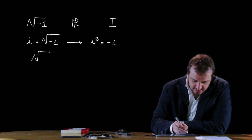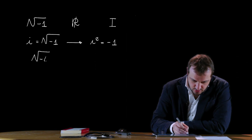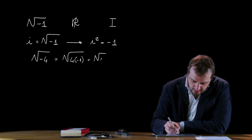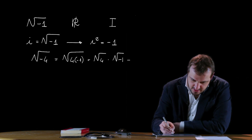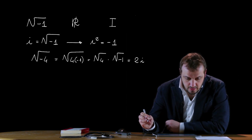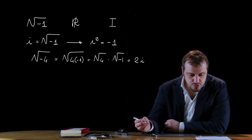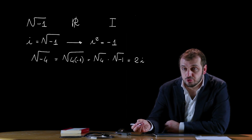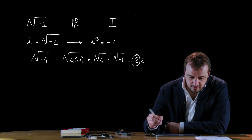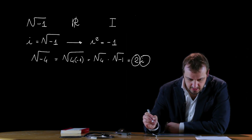Let's take an example: the square root of -4 equals the square root of 4 times -1, so the square root of 4 times the square root of -1, and consequently equals 2i. Imaginary numbers are simply the product of a real number — in this case 2 — times the imaginary unit i.